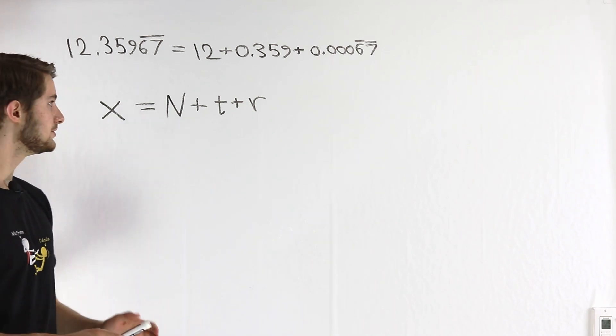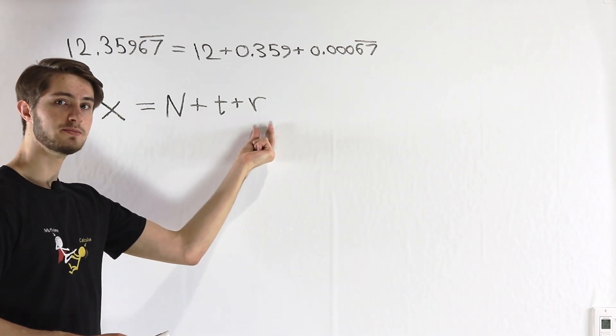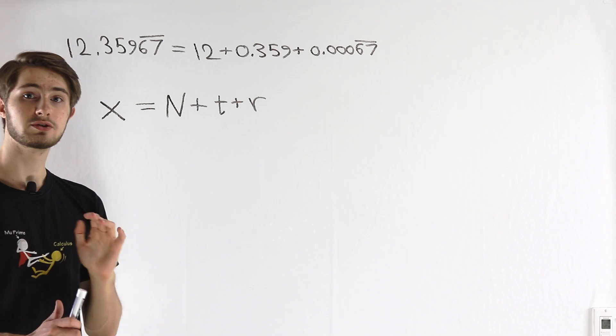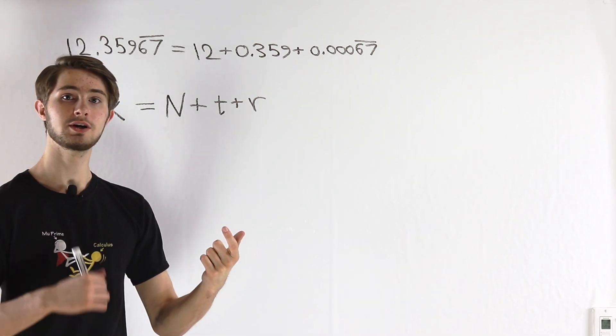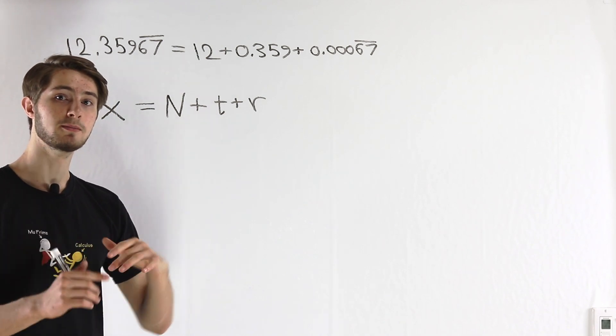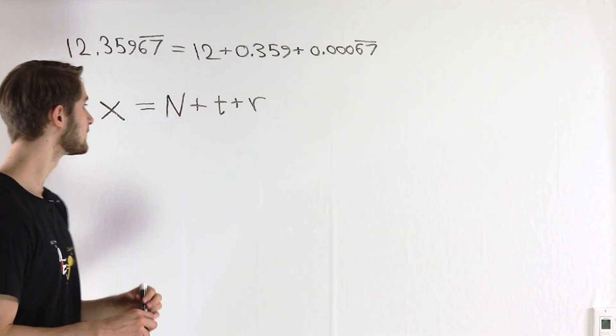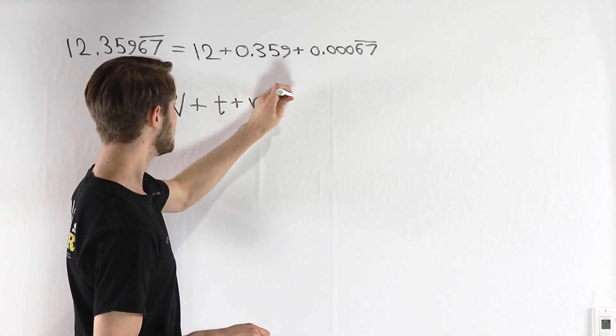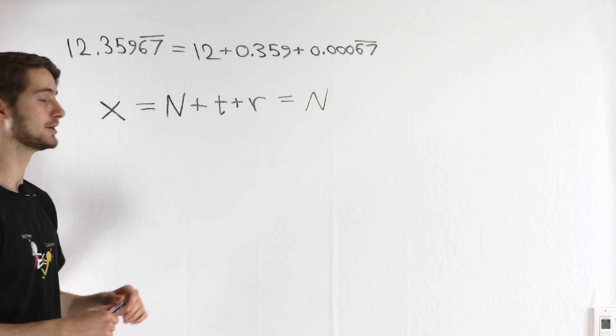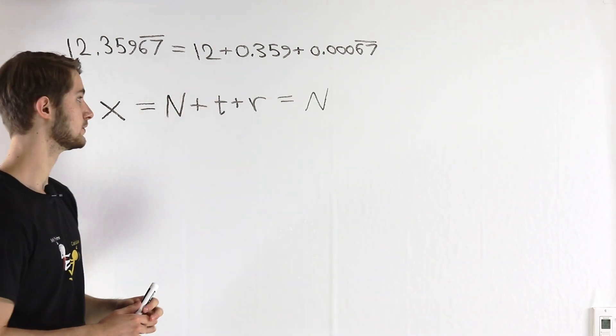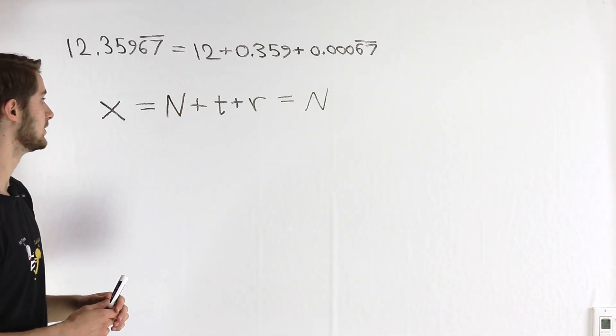From here all we need to do is show that each of these three terms is a rational number, because the rational numbers are closed under addition, which means one rational number plus another rational number must give us a rational result. We already know that N must be a rational number because it's an integer. In this case, 12 is just 12 over 1. Every integer is a rational number.